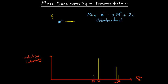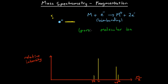So one electron has come in, hit this molecule, and taken another electron with it. We often give this ion — this M⁺ ion — a name. Because it's the beginning of the mass spectrometry process, what we start with before it fragments down to smaller pieces, we call this the molecular ion, or sometimes the parent molecular ion.